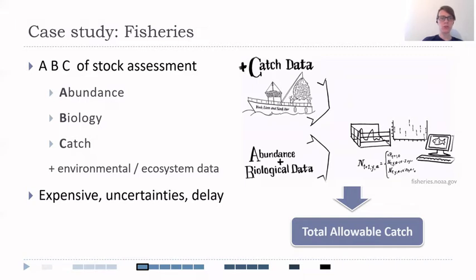In fisheries management, the stock assessment is usually done through ABC practice. This is a combination of estimates of the abundance, combined with biological data such as size, age, recruitment, together with catch data provided by fishermen, combined with environmental and usually very complex ecosystem data. Everything is then fed into statistical models, which give us the stock assessment as well as total allowable catch, which represents the amount of fish that can be caught for the sustainability of the stock.